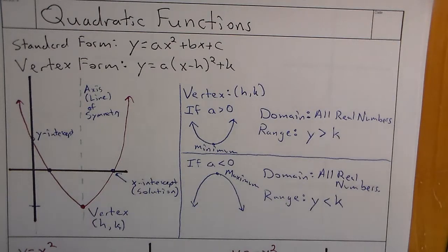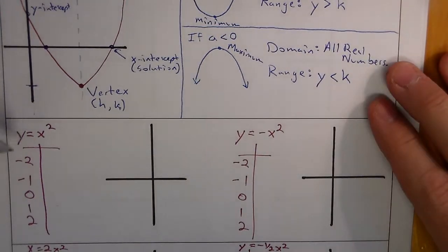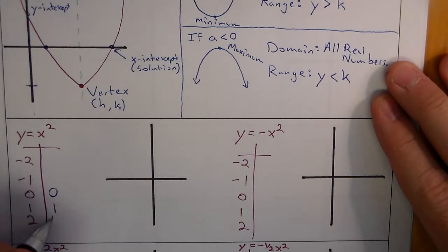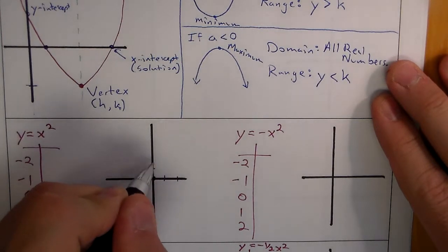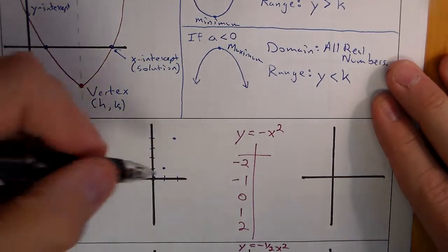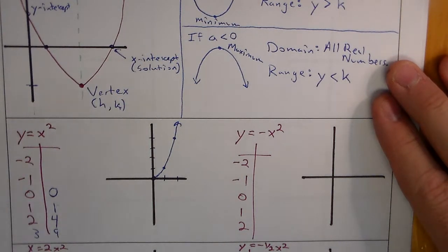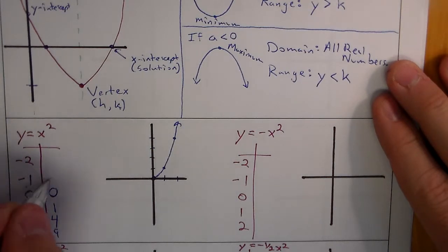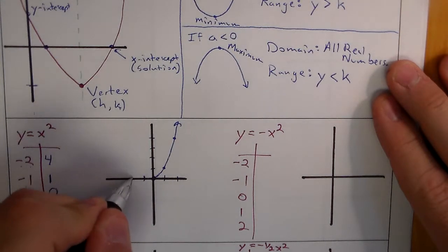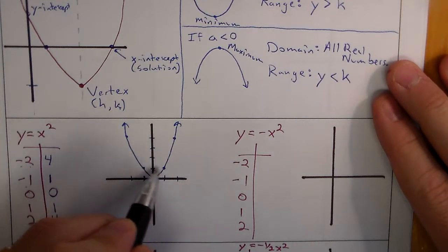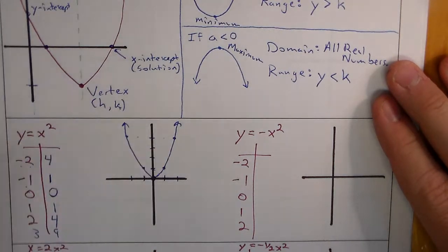For a basic sketch, we need the vertex, direction it opens, and we'll pick up the width as we go. For y = x², using a table: x = 0 gives 0, x = 1 gives 1, x = 2 gives 4. Plotting those gives half the parabola, opening up and getting steeper — x = 3 would give 9. Because of symmetry, negative one squared is also 1, and negative two squared is 4, so we reflect to get the full parabola.